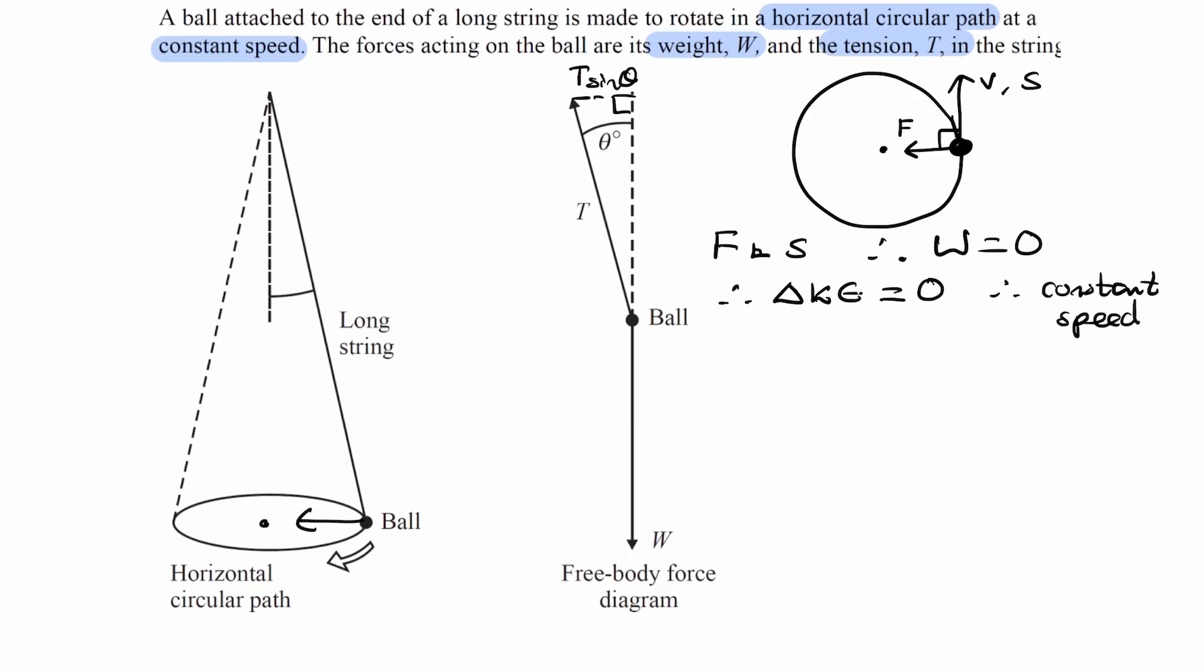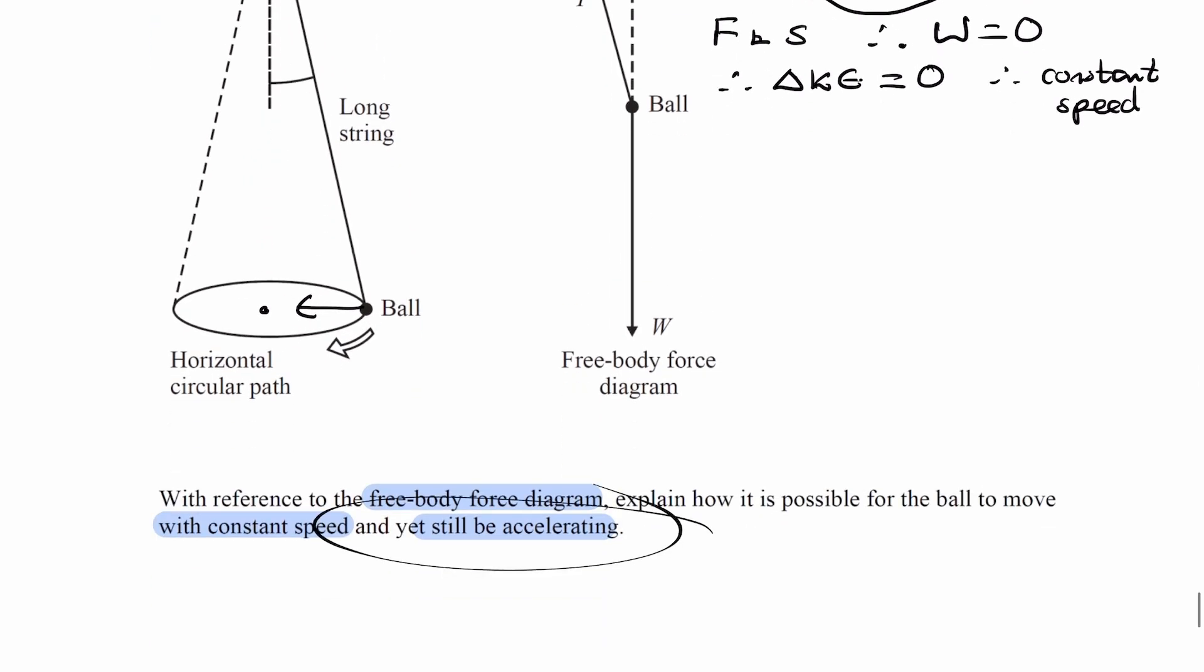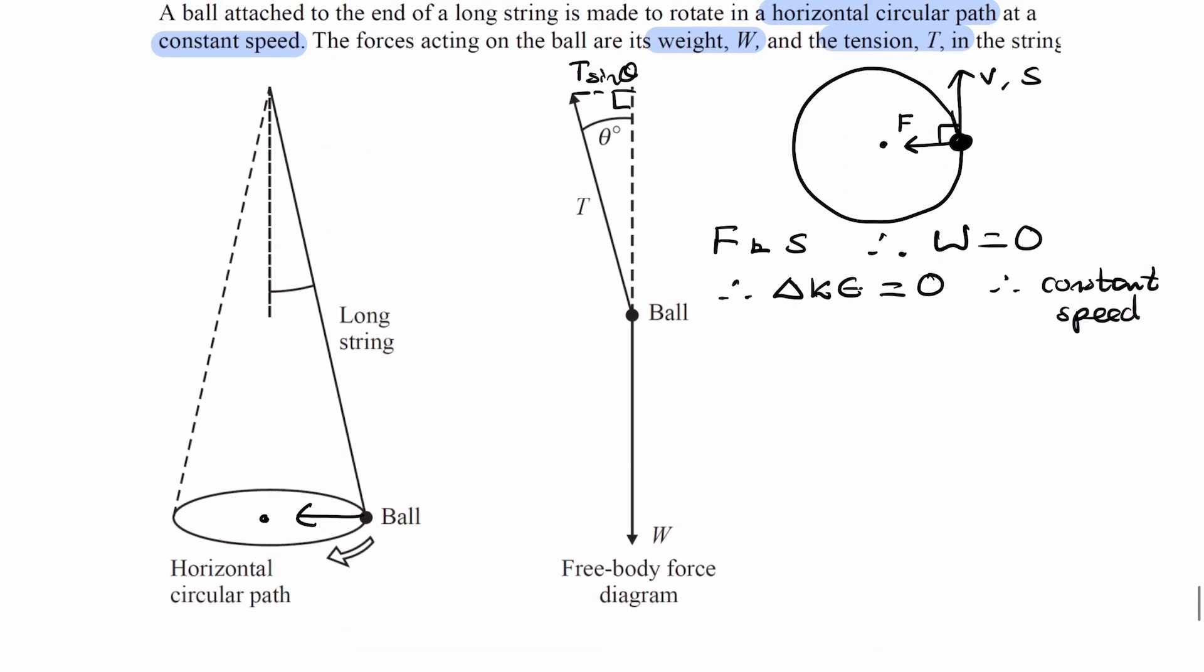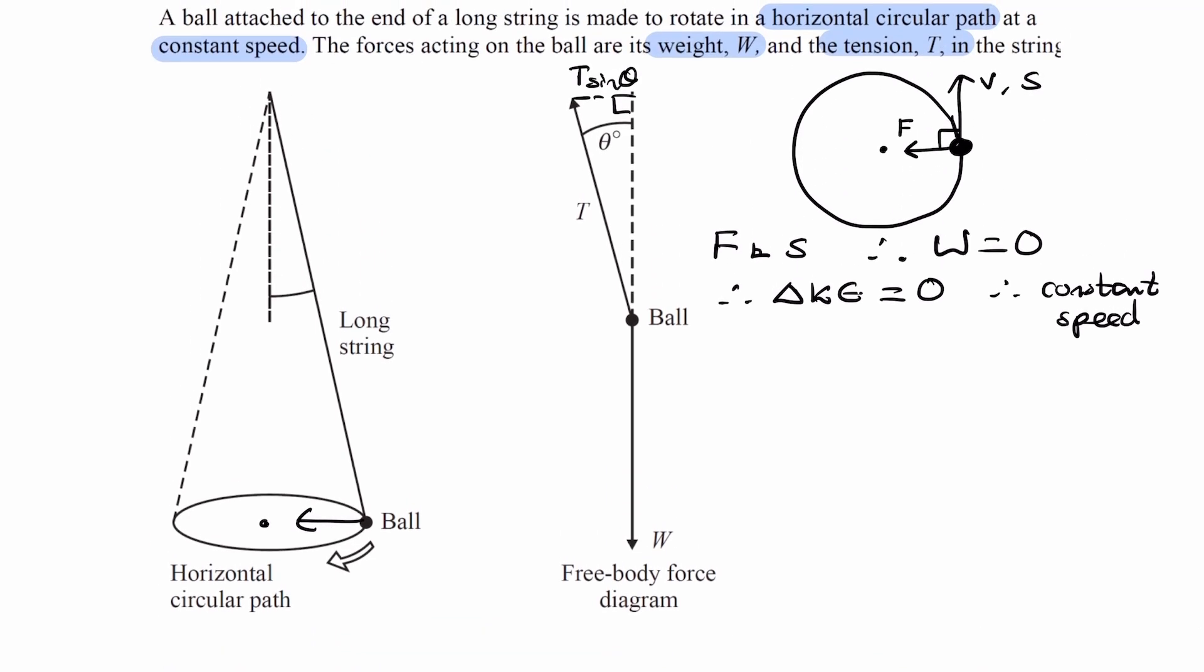And then for the second part, and yet still be accelerating, there's a couple of ways we can approach this. One way is that there is a resultant force. The resultant force is the horizontal component of tension. That is the F that we have here in our diagram.